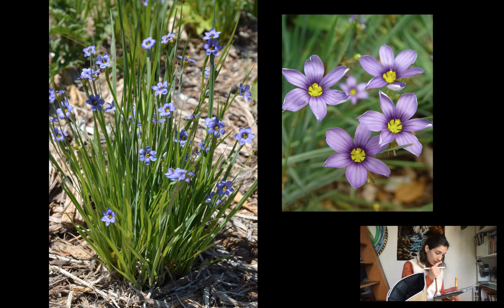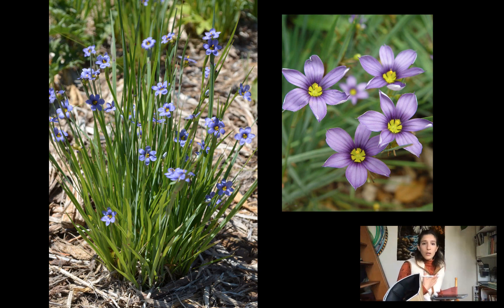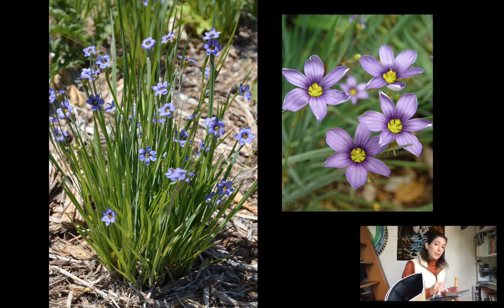Here's another cute little member of the family — the Sisyrinchium, or blue-eyed grass. This one has tepals, but not all members of the family have tepals. When you first see a plant like this, you might think 'Liliaceae.' It totally looks liliaceous — Iridaceae is closely related and they have very similar features. But this is not Liliaceae, and you'd have to look very closely to tell the difference.